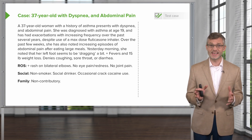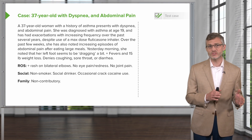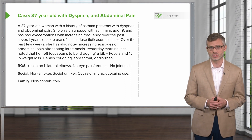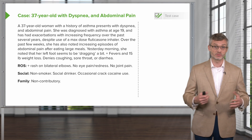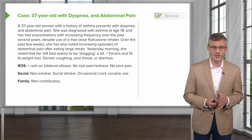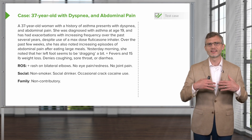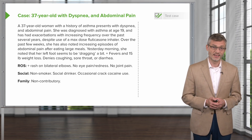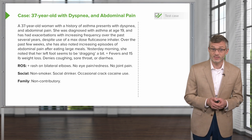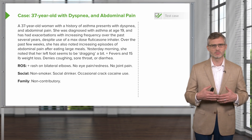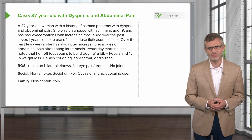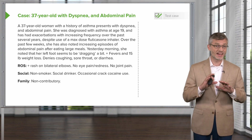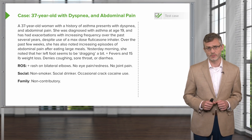She was diagnosed with asthma at age 19 and has had exacerbations with increasing frequency over the past several years, despite the use of a maximum dose of a fluticasone inhaler. Over the past few weeks, she's also had increasing episodes of abdominal pain after eating large meals, and yesterday morning she noted that her left foot seems to be dragging a bit. She also reports fevers and a 15-pound weight loss, but she denies any coughing, sore throat, or diarrhea.